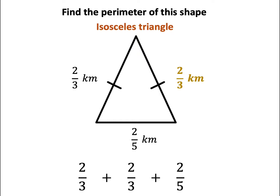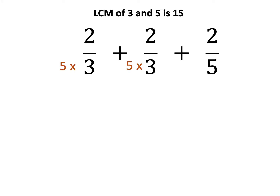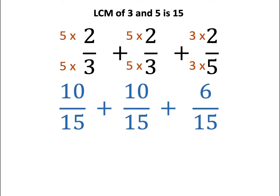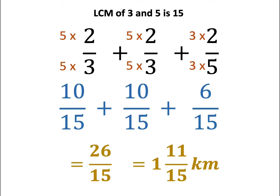We find the lowest common multiple of 5 and 3, which is 15. Multiply 3 by 5 and 5 by 3, and apply the same to the numerators to keep the fractions equivalent. From the new fractions, we add the numerators together to give us 26 out of 15. Converting the improper fraction into a mixed fraction, the final answer is 1 and 11 out of 15 kilometres.